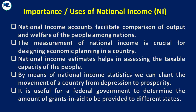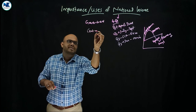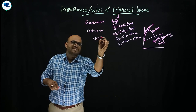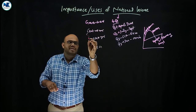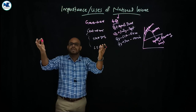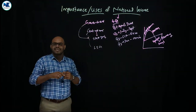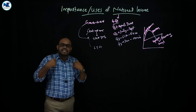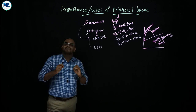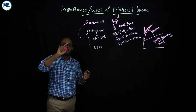Tenth point: national income data is useful for the federal (central) government to determine the amount of grants-in-aid to be provided to different states. The government structure includes the central government, state governments, and local self-governments. This concludes the importance or uses of national income.